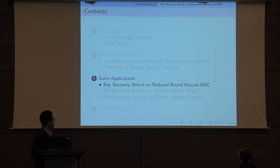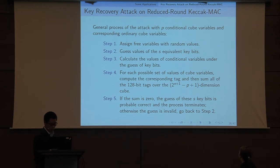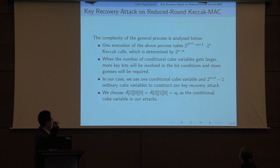Then we will talk about the applications. The first application is the key recovery attack on reduced-round Keccak-MAC. Here is the general process of the attack: we just need to guess the value of i equivalent key bits and calculate the cube sum. If we get a zero cube sum, the guess may be the right one. If it's not zero, we turn to another guess and compute the sum. We analyze the complexity of the general process here — one iteration takes 2 to the i minus p Keccak calls, which is determined by 2 to the i minus p.